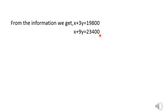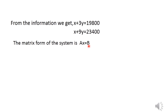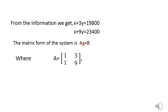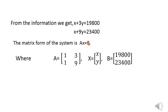We write the system of equations in matrix form AX = B. The coefficient matrix A is formed by writing the coefficients of X in the first column and the coefficients of Y in the second column, giving A = [[1, 3], [1, 9]]. The variable matrix X = [X, Y], and the constant matrix B = [19,800; 23,400]. We then rewrite the matrix form as X = A inverse times B — call this equation 1.